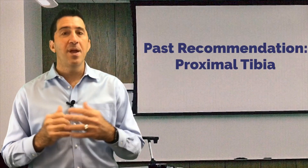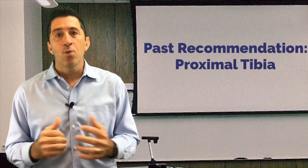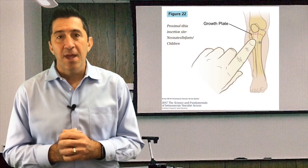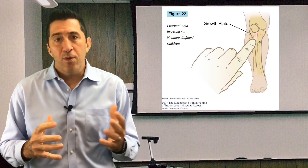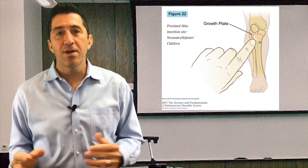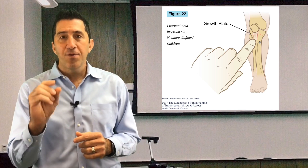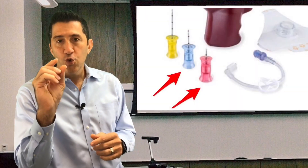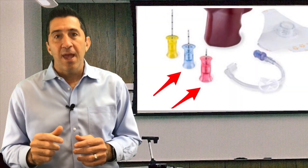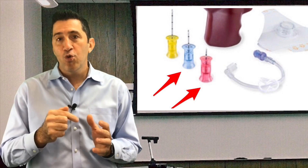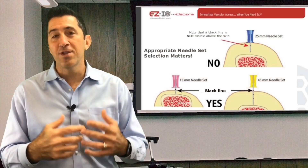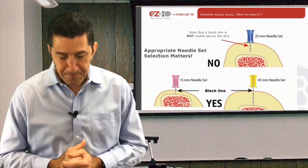So what have we done for many years? We've taught the proximal tibia. And the proximal tibia, we found that it hasn't been the best. Why? Because you have to either use a short needle — the pink one — or the blue one. And either it's too short, or you puncture all the way through the bone and you end up filling up the whole calf with fluid.